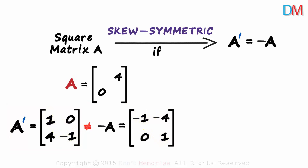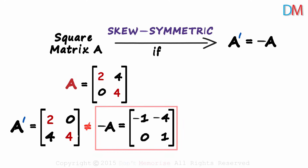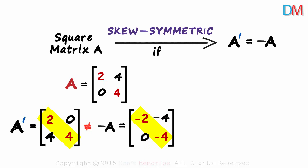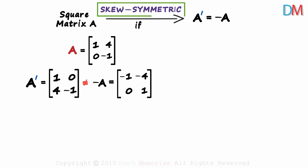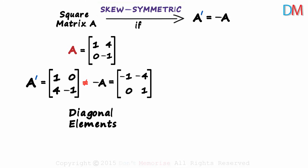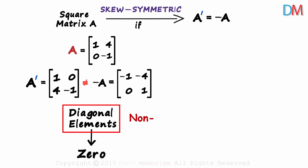If the diagonal elements of a matrix were 2 and 4, then for A transpose they would be 2 and 4, but for negative A they would be minus 2 and minus 4 — not equal. So if the diagonal elements are non-zero, the matrix can never be skew symmetric. Therefore, for a matrix to be skew symmetric, the diagonal elements must be zero.